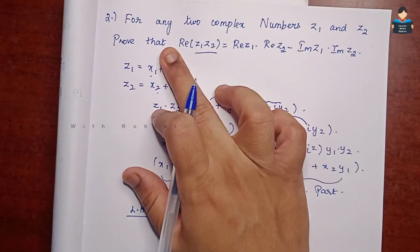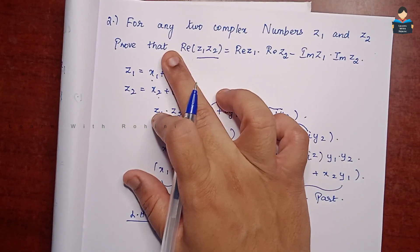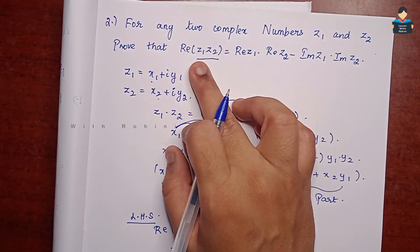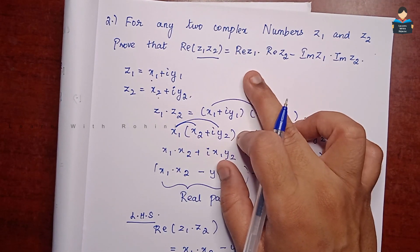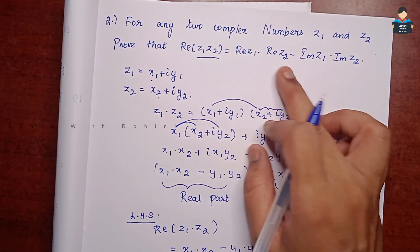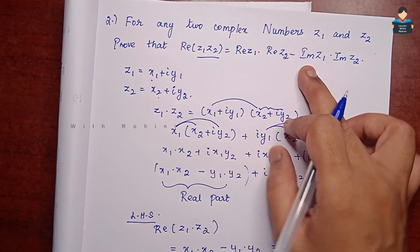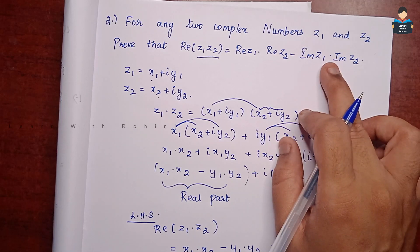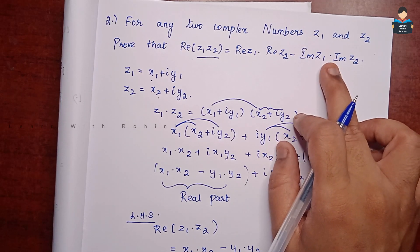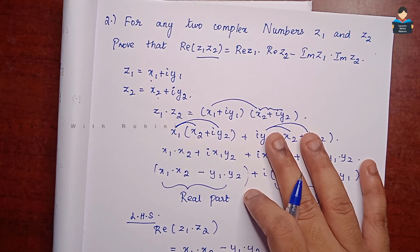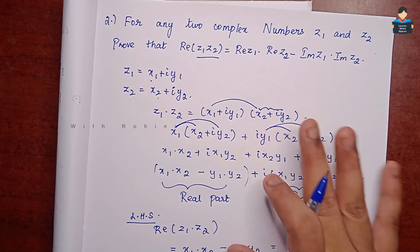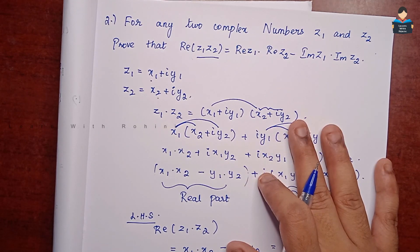So this completes the proof that Re(Z1 Z2) equals Re(Z1) into Re(Z2) minus Im(Z1) into Im(Z2). This completes the video. For the third and fourth sums, please watch the next video. Please like, share, subscribe, and thank you.